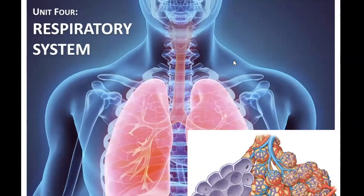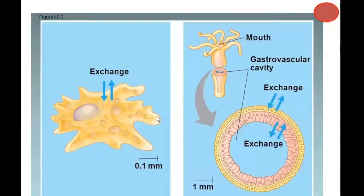We're going to start off on our respiratory system today, which will include mostly talking about getting air into the lung space in general. We'll start off with one of those red dot moments where you don't have to take notes. The whole reason we're eating and breathing is because every single cell in your body needs oxygen, needs nutrients, and needs to get rid of waste.